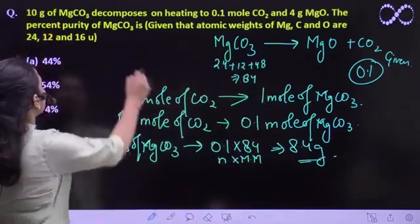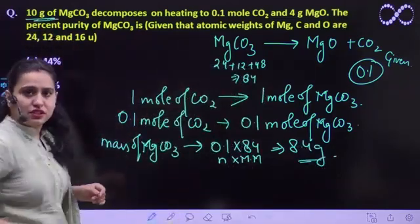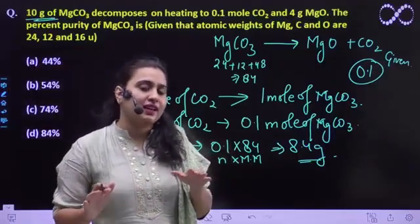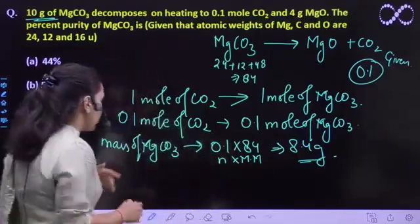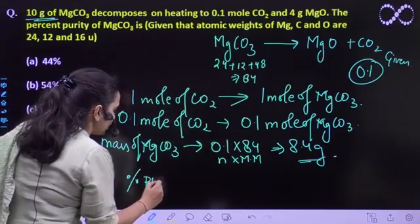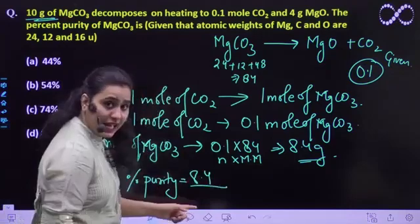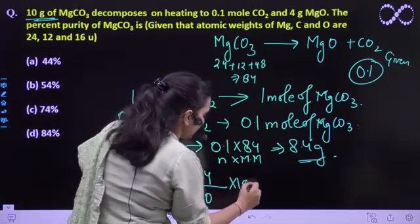We started with what? 10 gram MgCO3. So out of 10 gram, only 8.4 is reacting, meaning the rest is what? Impurity. So percentage purity will be 8.4 reacting out of 10, into 100.